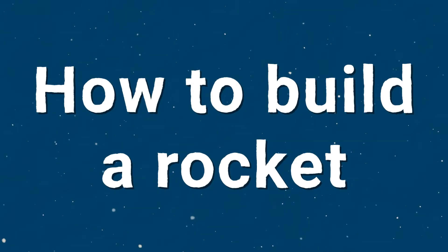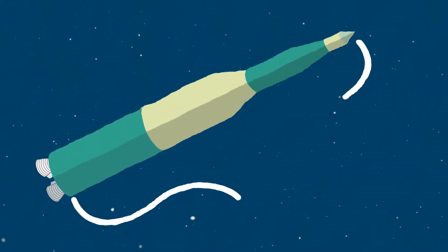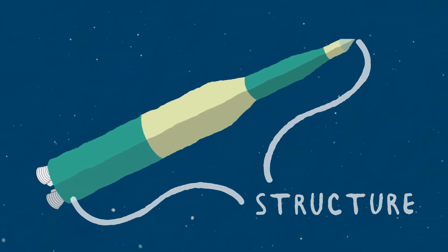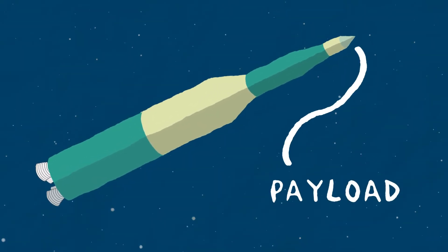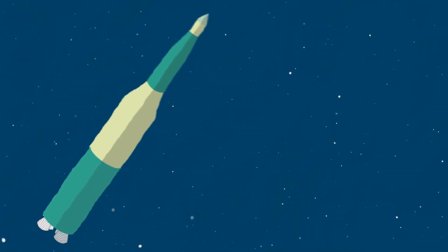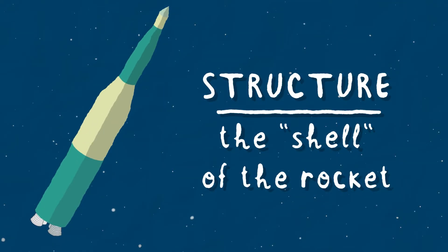Rockets have four key sections: the main structure, propulsion, guidance system, and payload. The main structure is the shell of the rocket, the thing that's keeping it together.